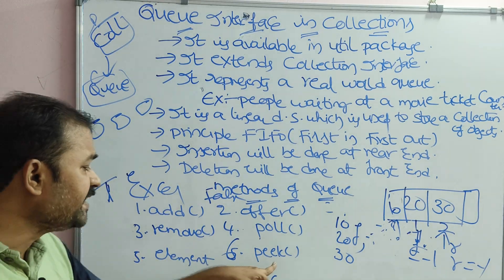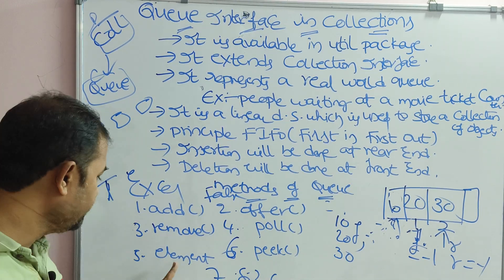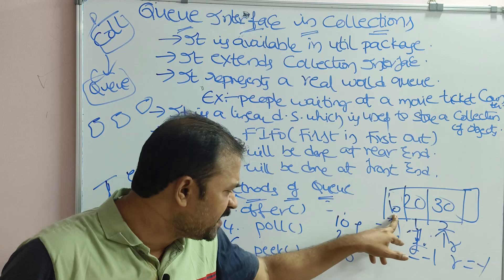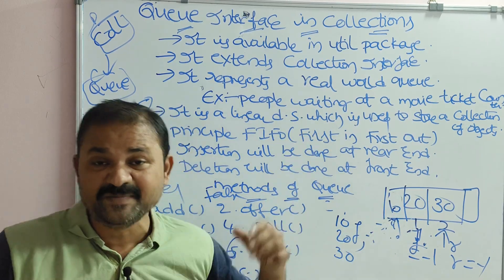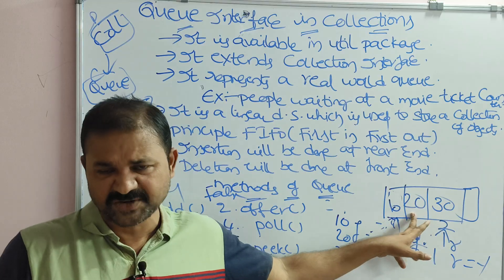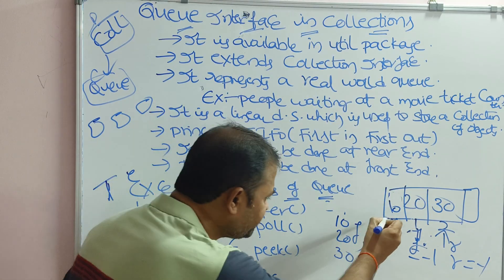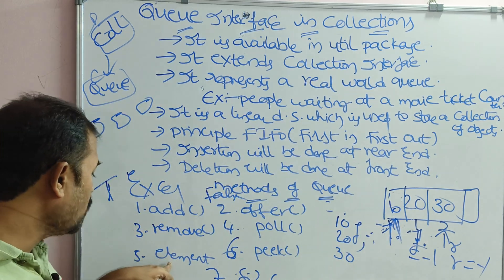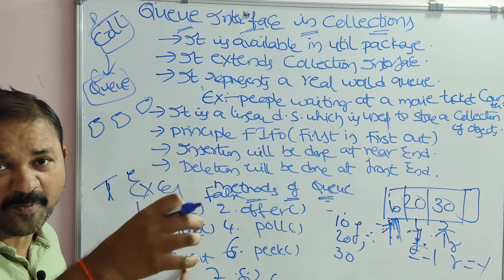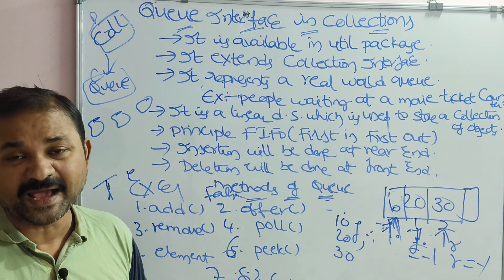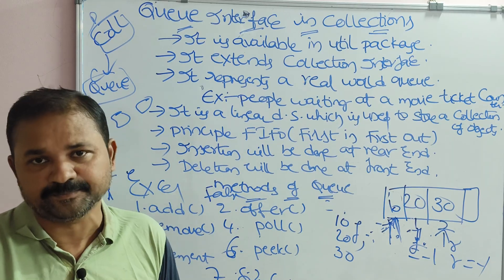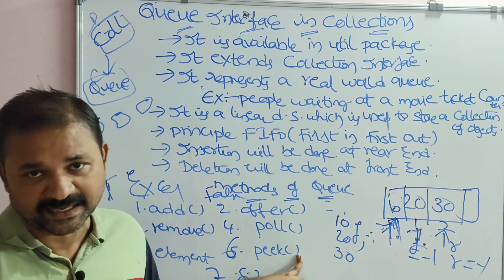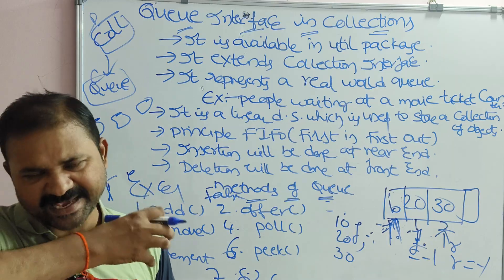The element and peek methods are both used to return the topmost element without deleting it. If the queue is empty and the operation fails, element returns an exception whereas peek returns null.